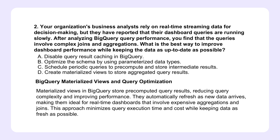Let's switch gears to question two. Imagine those same sales teams rely on dashboards fueled by real-time data, but the dashboards are so slow — slower than a sloth in a hammock. What do we do to speed things up when every second counts? We could turn to the elegance of materialized views. Think of a massive company-wide report that takes hours to generate. Instead of running those complex queries every time someone wants to see it, we pre-compute the results and store them in a materialized view — a ready-to-go summary. And the beauty is they automatically update as the underlying data changes, so we get speed and accuracy.